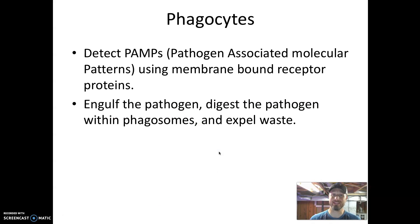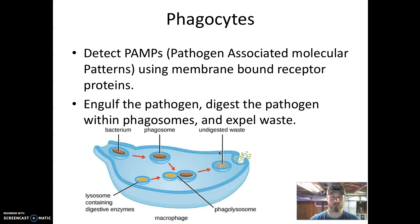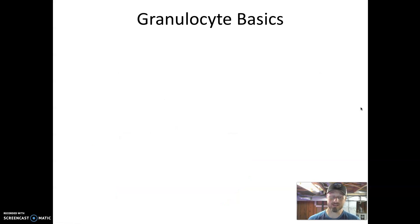When a PAMP is detected, the phagocytic cell is stimulated to engulf the pathogen, digest it inside something called a phagosome, and then expel the waste. In the diagram shown, the phagocytic cell detected a bacterium because it had a PAMP — a unique molecular pattern not normal inside the human body. The cell engulfed the bacteria, digested it inside the phagosome, and the waste was expelled. This is the general role of phagocytes, and it is one of the primary roles of granulocytes in our immune response.